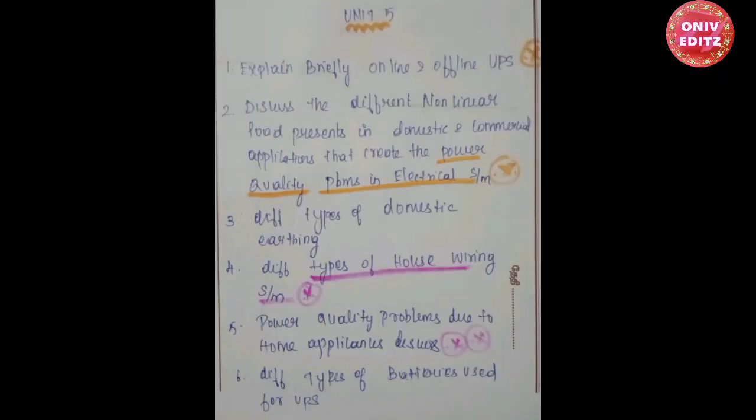Now we are going to Unit 5. First question: online and offline UPS. Second question: different non-linear loads present in domestic and commercial applications that create power quality problems in electrical systems. Third question: different types of domestic earthing. Fourth question: different types of house wiring systems. Fifth question: power quality problems due to home applications. Sixth question: different types of batteries used for UPS.